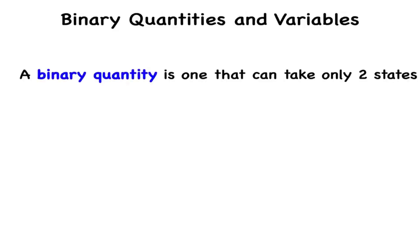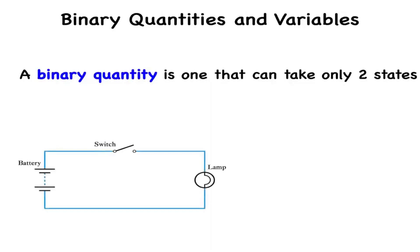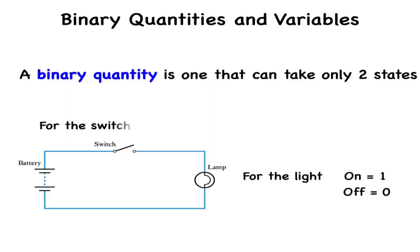A binary quantity is one that can take only two states. This is a binary arrangement: a switch in series with a power source and a light. The switch can be either open or closed, and the light is either off or on. We can assign a binary number to the switch and the light. For the light: on equals 1, off equals 0. For the switch: closed equals 1, open equals 0. In order to analyze these binary arrangements, we devise a truth table.